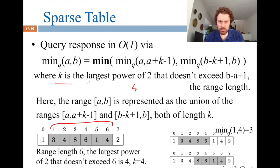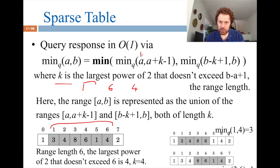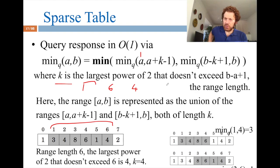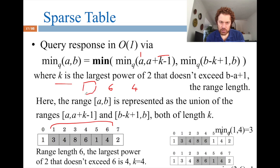Conceptually the BIT is a tree, but we maintain it as an array — one-indexed for implementation reasons. The key function is p(k), the largest power of two that divides k. For example, p(6) = 2 because 4 does not divide 6. Then T[k] contains the sum of a range of length p(k) ending at k. So T[6] holds the sum of 2 elements ending at index 6.